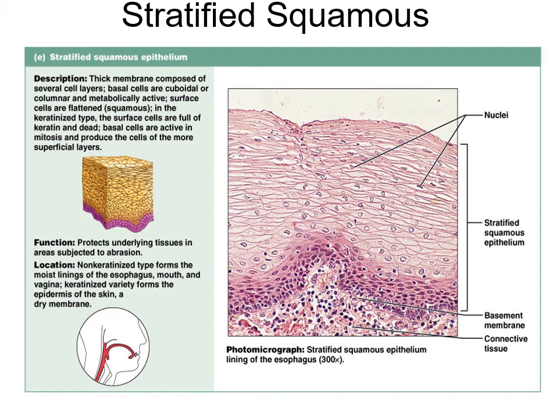Stratified squamous epithelium is found where some protection is needed. The non-keratinized form is found in mucous membranes from the mouth all the way down through the esophagus, protecting from abrasion or irritation. It's also found in the vagina. Eventually it forms the epidermis, but then it will be keratinized.